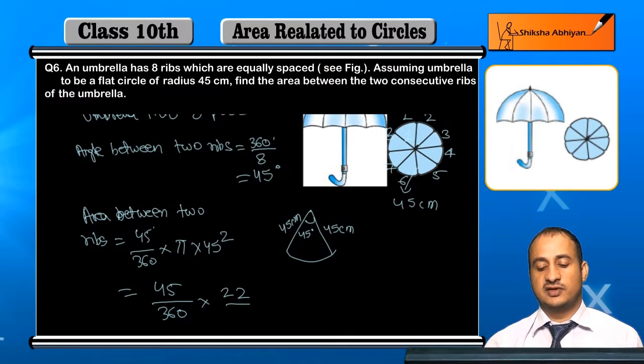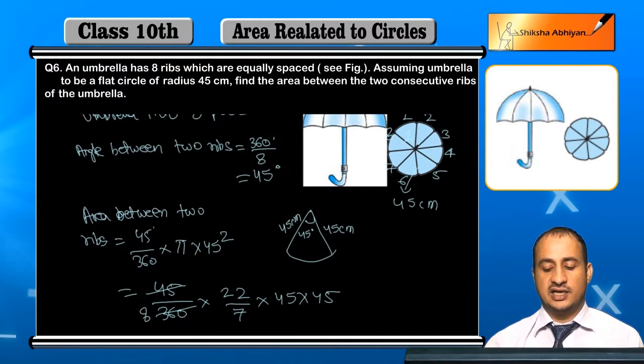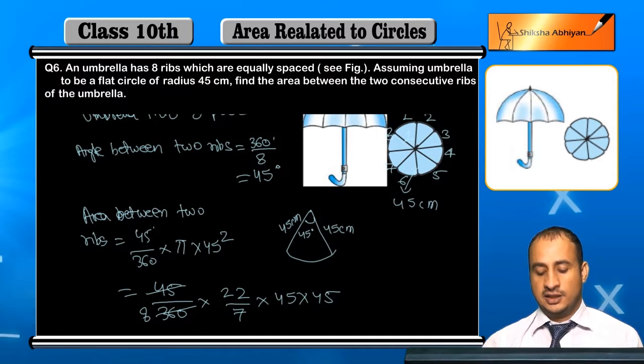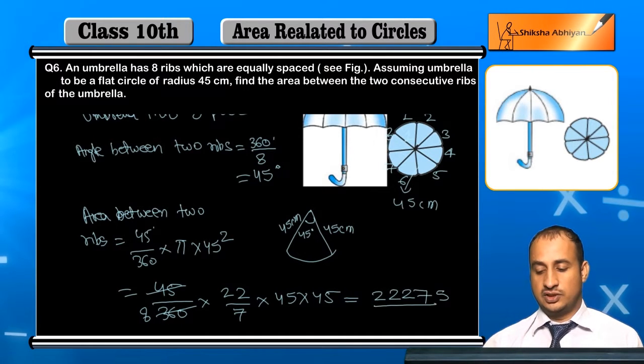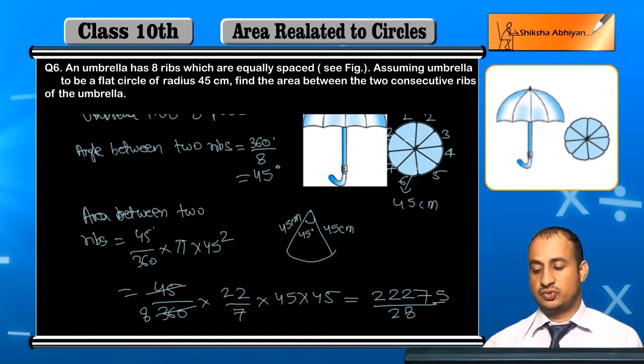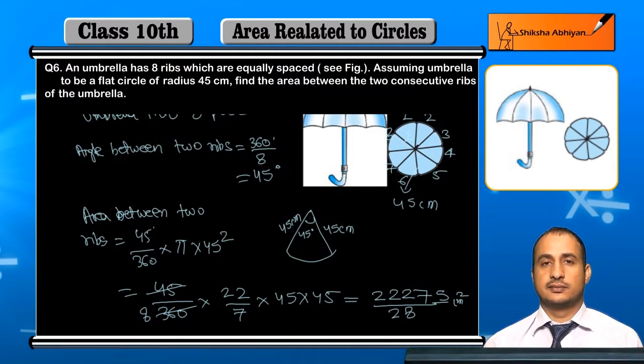And further the total calculation is 2275 by 28 cm squared. This calculation gives the area between the two consecutive ribs.